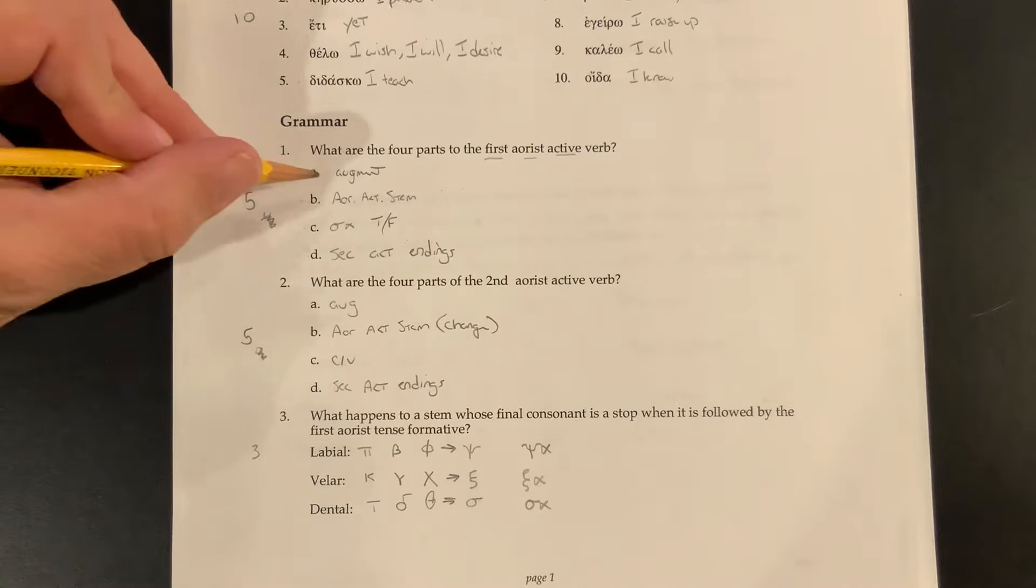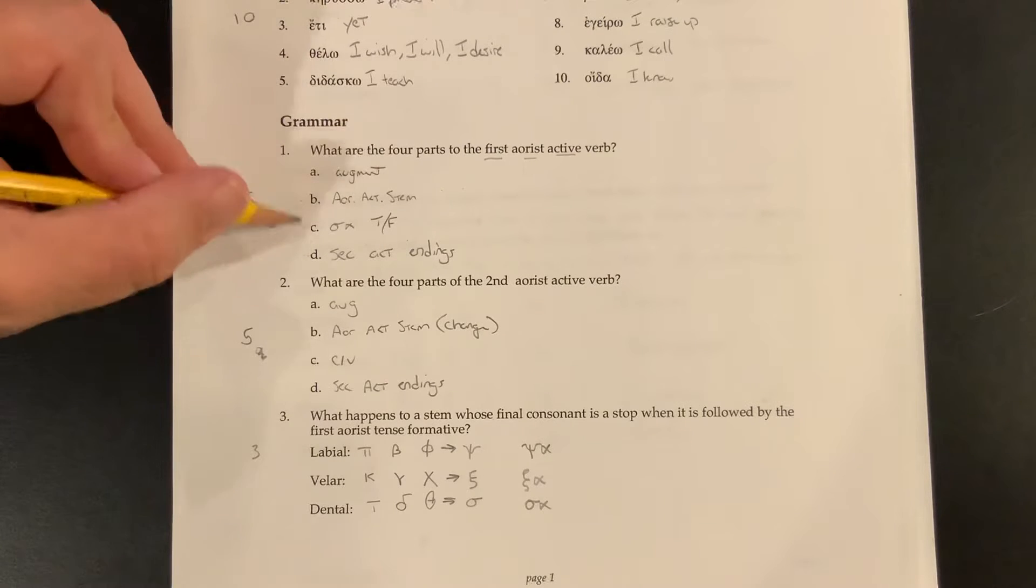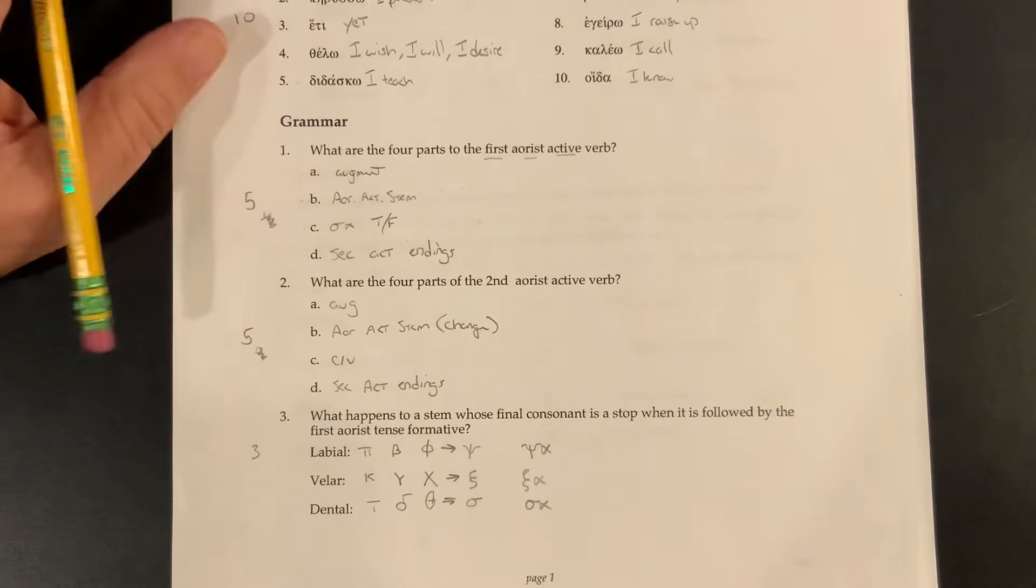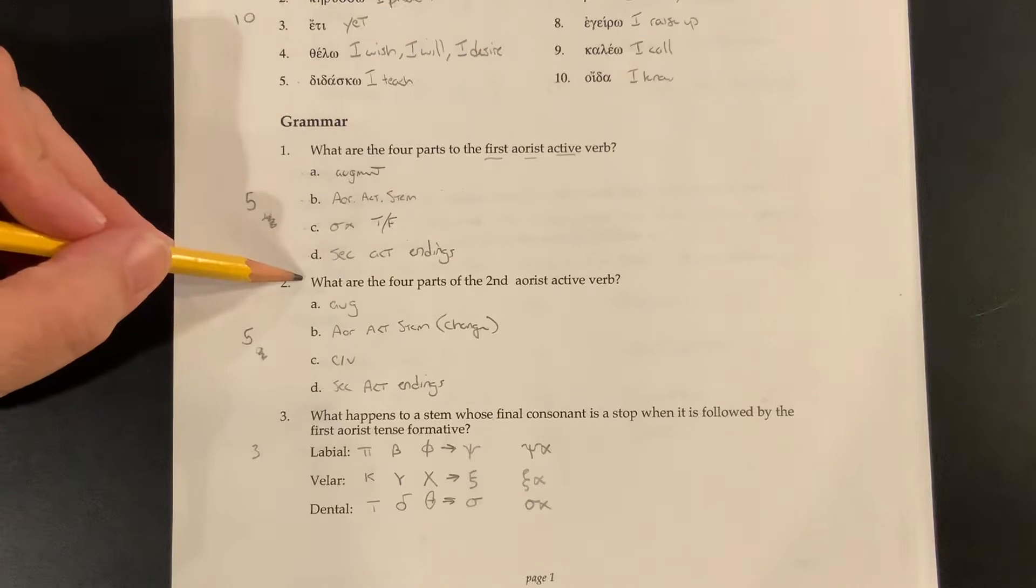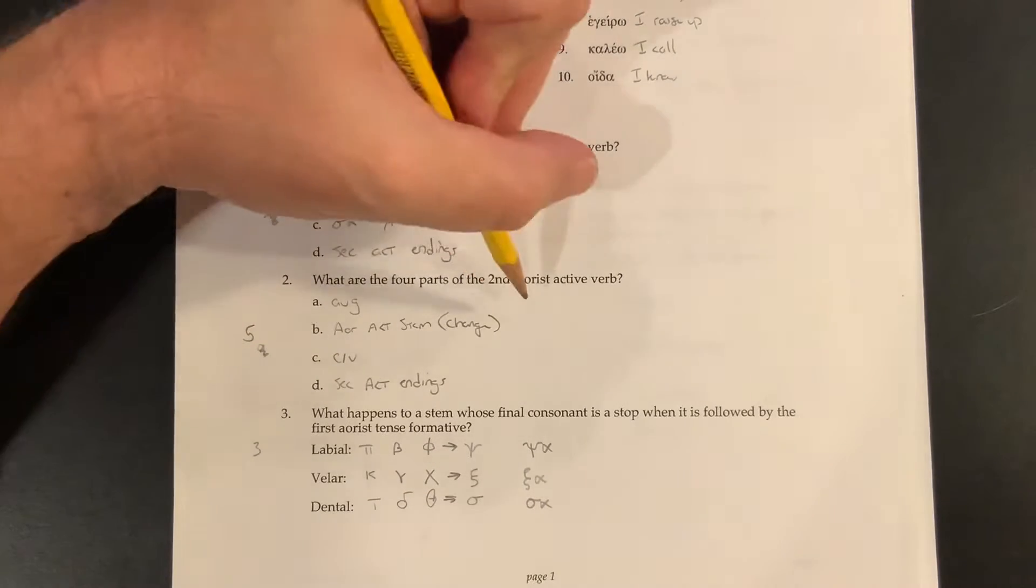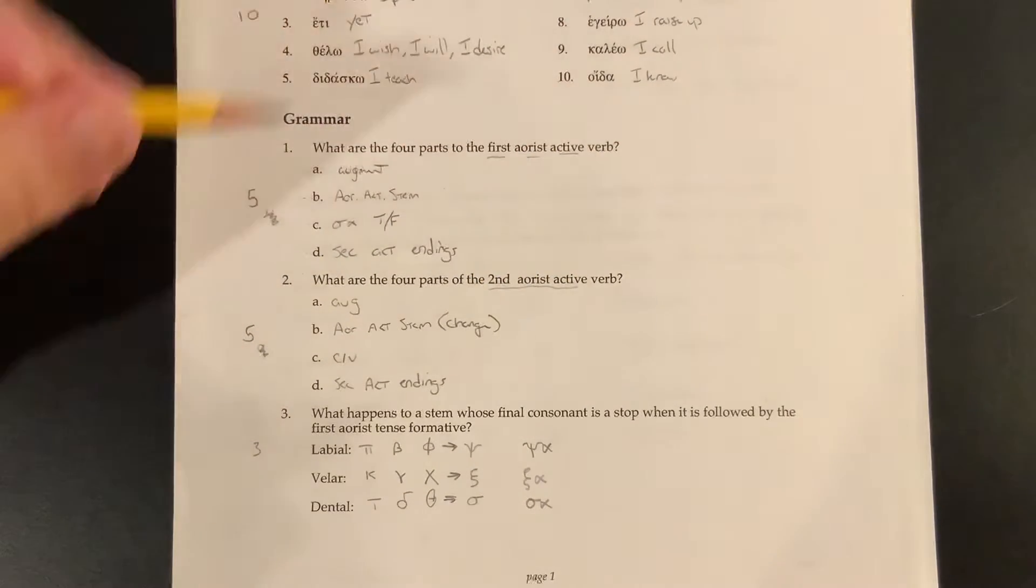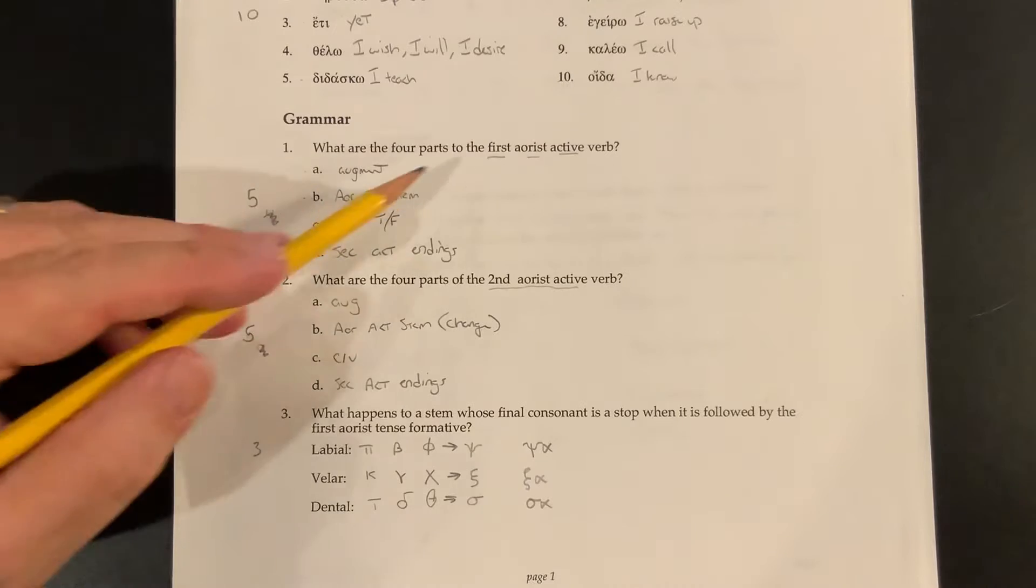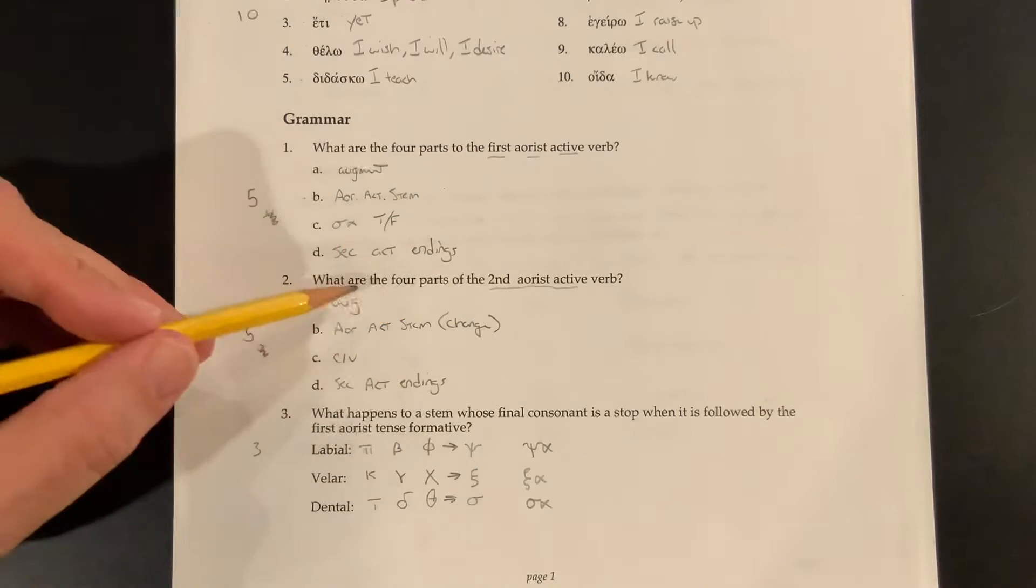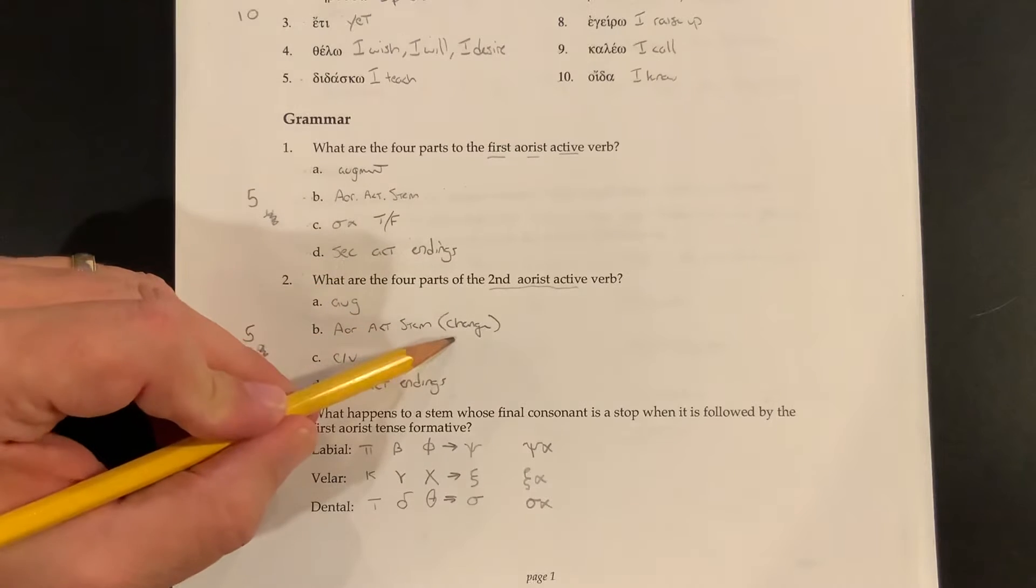And so if you missed one, then mark it incorrect and we'll move on. Okay, what are the four parts of the second Aorist active verb? The second Aorist active verb. So in this case, we recognize that these are first Aorists that use the sigma tense formative, whereas second Aorist actives use a stem change.